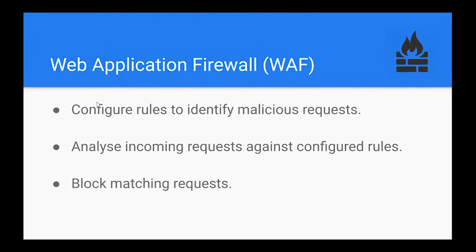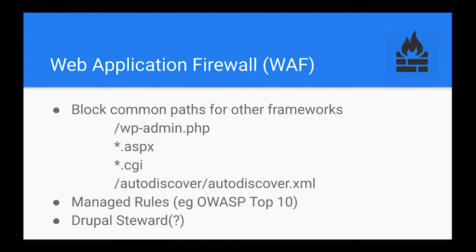The idea with a web application firewall is you can configure rules. When the traffic comes in, the firewall checks or analyzes the request and matches it against the rules you have configured. If it hits, it blocks the request before it ever even comes to Drupal, which can save you a lot of traffic and a lot of compute. One thing most people should do is set up your WAF to block common paths for other frameworks.